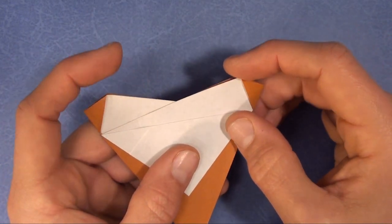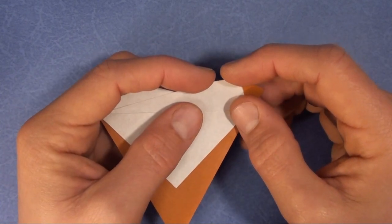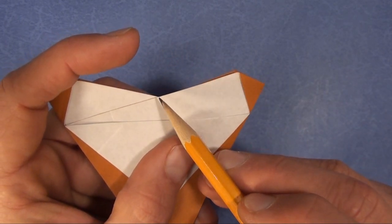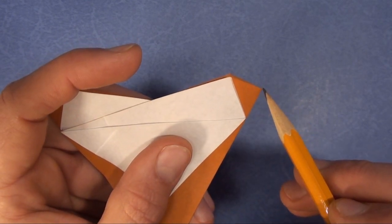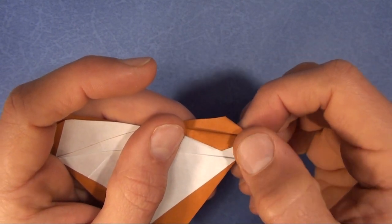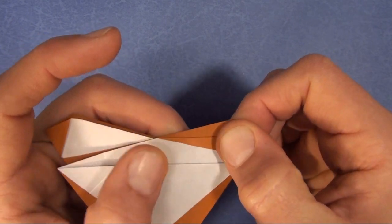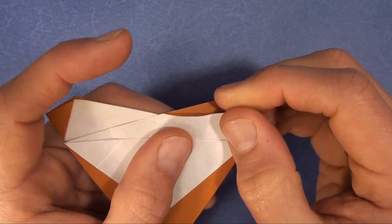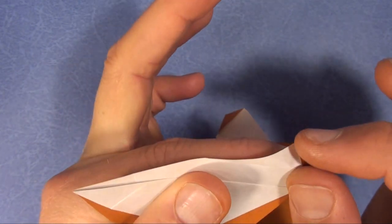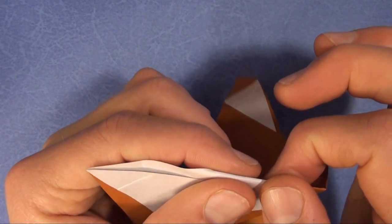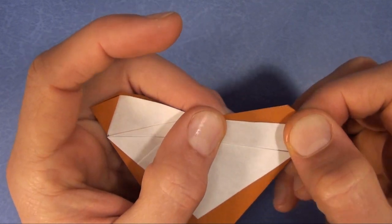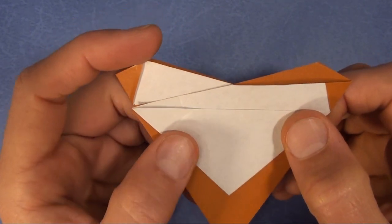And we're going to mountain fold these flaps, but first we're going to valley fold them. And the fold is going to originate right at the center and terminate right at the corner. Just like that. And once you've valley folded it, take it and reverse that crease. See, my finger is on the back side to make it easier. Like that. And we have to repeat that step three times. Here we go.